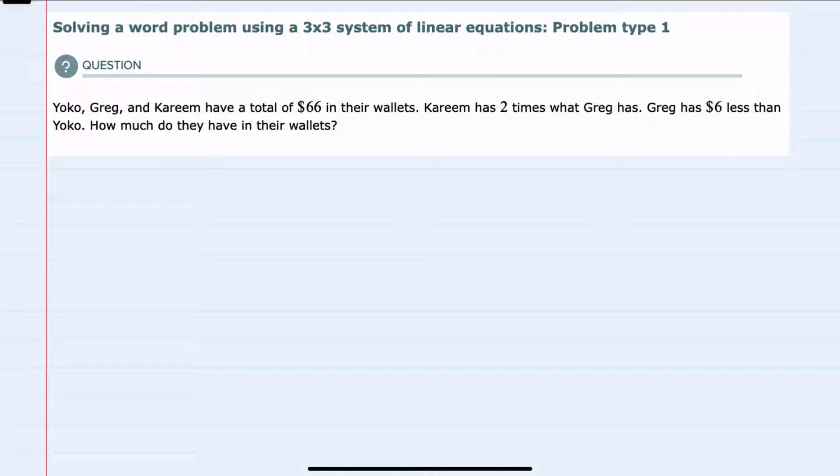We're told first that Yoko, Greg, and Kareem have a total of $66 in their wallets. So I'm going to start with that, and since we have three people—Yoko, Greg, and Kareem—for variables, I'll use Y, G, and K. I know that the total that they have, adding up what everyone has in their wallets, is $66. So that's our first equation.